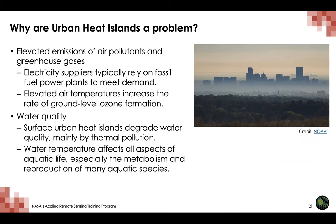Higher temperatures can increase energy demand, which generally causes higher levels of air pollution and greenhouse gas emissions. Most electricity in the United States is produced from combusting fossil fuels. These pollutants are harmful to human health and contribute to complex air quality problems such as acid rain and climate change. In addition, elevated air temperatures increase the rate of ground-level ozone formation, which is produced when NOx and volatile organic compounds react in the presence of sunlight. Finally, surface urban heat islands degrade water quality mainly by thermal pollution. When warm runoff from impervious surfaces flows into ponds, wetlands, rivers, and lakes, aquatic life can experience stress and shock when water temperatures reach a certain level.